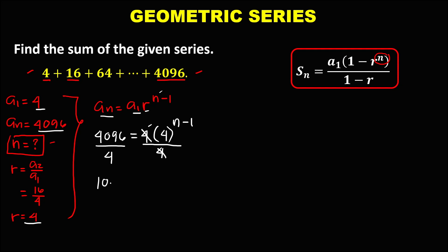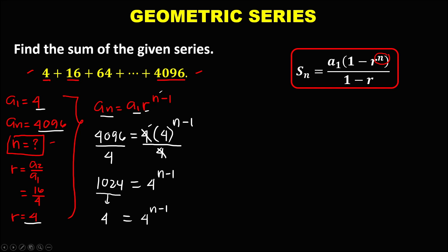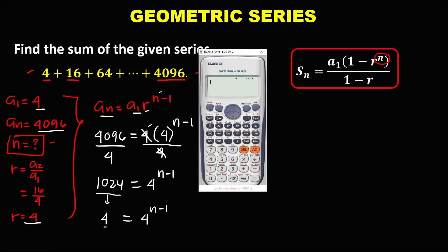So we have 1,024 equals 4 to the power n minus 1. We need to rewrite 1,024 in exponential form with base 4, because on the other side the base is 4 to the power n minus 1. So: 4 to the power 3 is 64, 4 to the power 4 is 256, and 4 to the power 5 is 1,024. So 1,024 is equal to 4 to the power 5.